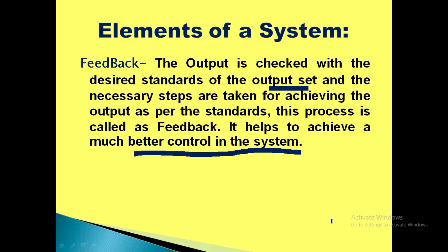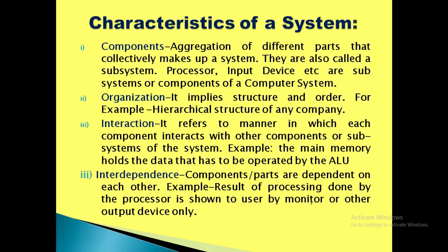We have completed the elements of the system. Now, what are the characteristics of the system? The most important characteristic is its components — its parts. The aggregation of different parts that collectively makes up the system — these are also called subsystems. For example, a whole computer system is made up of multiple subsystems.